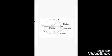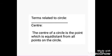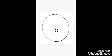Terms related to circle. Center: The center of a circle is the point which is equidistant from all points on the circle. The point O inside the circle is the center of the circle.